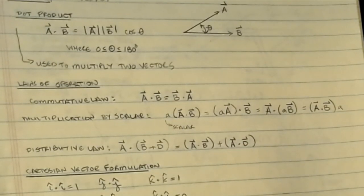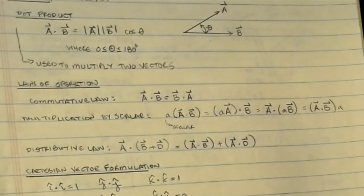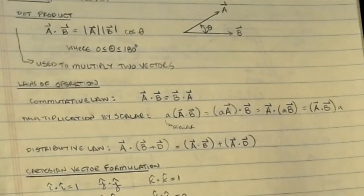When dealing with vectors there are several properties and products that are often found to be very useful. This video we're going to focus on the two primary ones we'll encounter in statics: the dot product and the cross product. We'll also talk about some identities and rules. This is probably some mathematics review you've crossed paths with at some point, but it's worth going over one more time to re-solidify anything you may have forgotten.